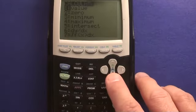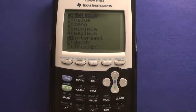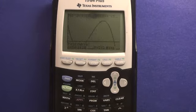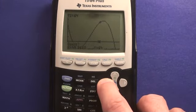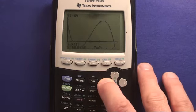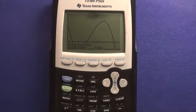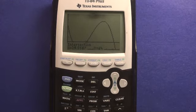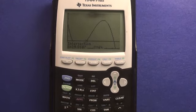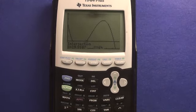So right there, our intersection point. Second, the trace button, which is the calculate menu. Intersection, first curve, yes. Second curve, yes. Take a guess, scroll all the way over, and press enter one more time. And then the estimated length would be about 30 inches. So I hope this helps you out. Good times.